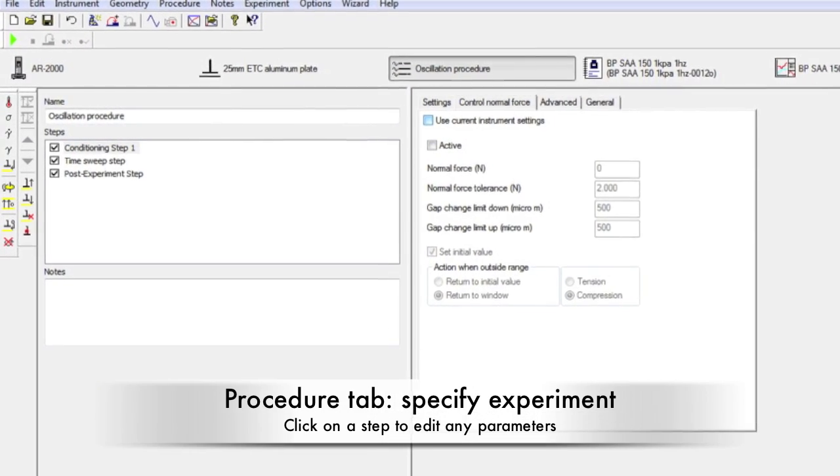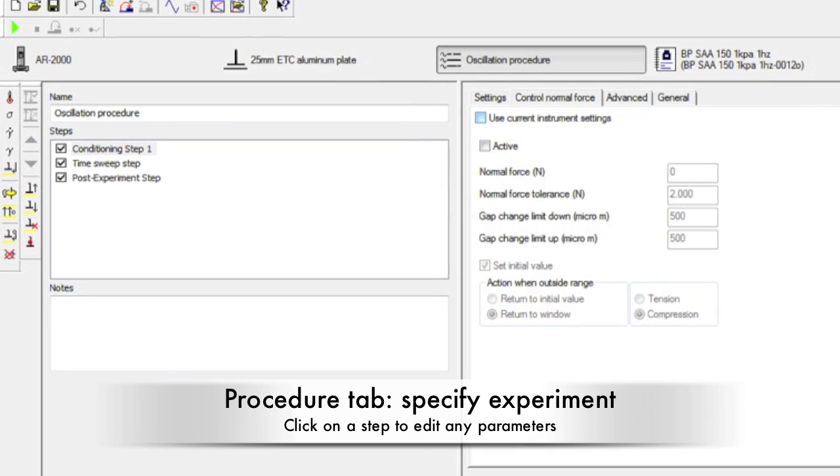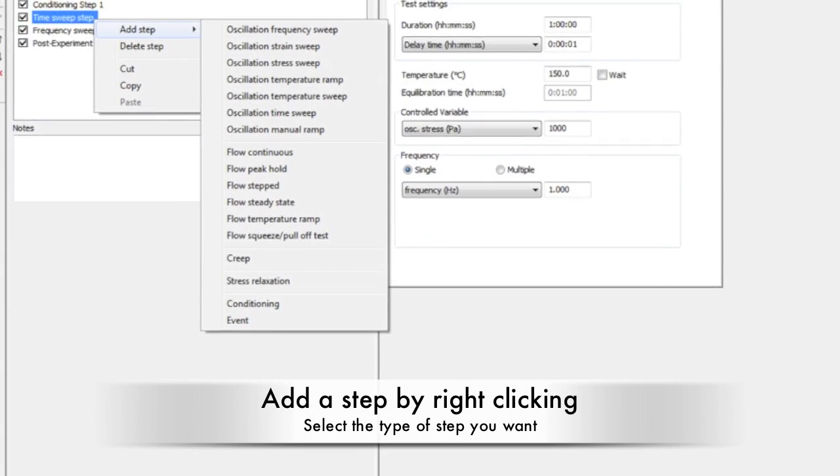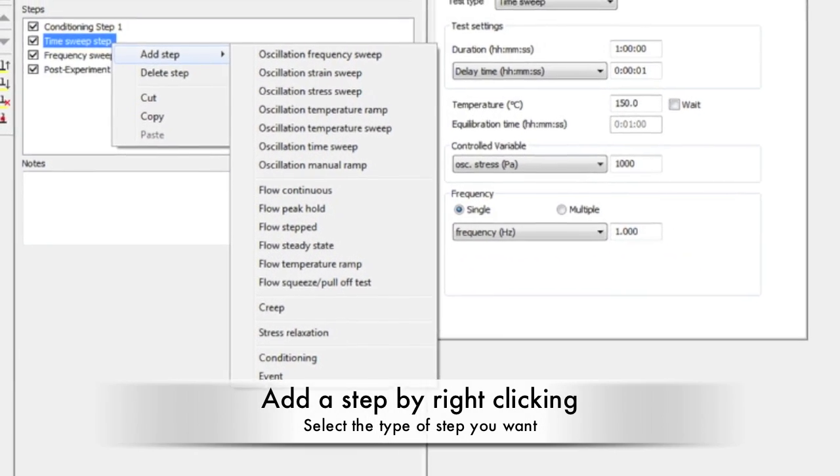In the next tab, the procedure is set up. By clicking on the step, you can edit all specifications for that step. To add a step, right click on an existing step and select Add a Step.